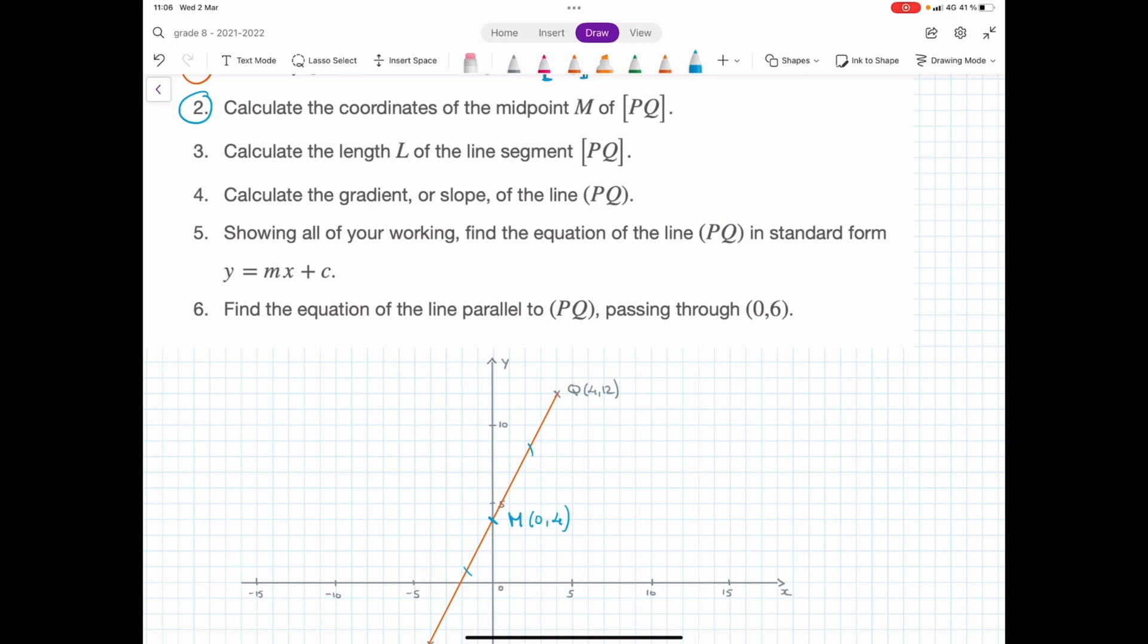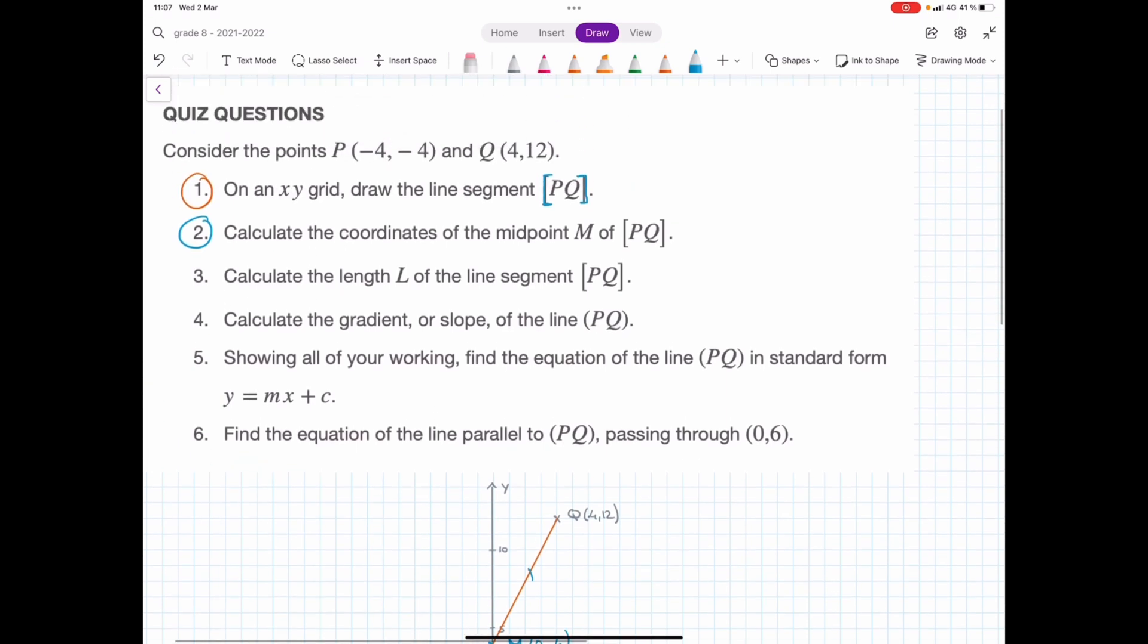So, before you even do any calculations, get a good idea of what it should be. Now, confirm that algebraically. And if you find that it's not 0, 4, like let's say you find the x-coordinate is 8, look back at what you drew. That's why you drew it. I'm not having you draw this stuff to please me. I'm having you draw it so that you can look back at your diagram and go, no, something's off. Now, if I go ahead and calculate the coordinates of the midpoint, I'll start by reminding you of the formula you need to know. Given a line segment with endpoints P, whose coordinates are x1, y1, and Q, whose coordinates are x2, y2, the midpoint will have coordinates x1 plus x2 over 2, y1 plus y2 over 2.